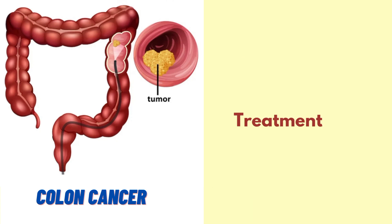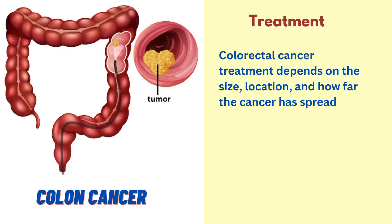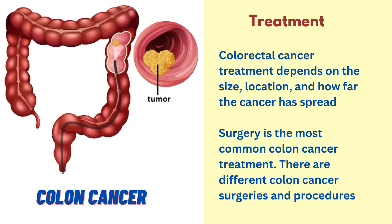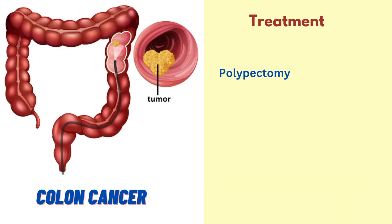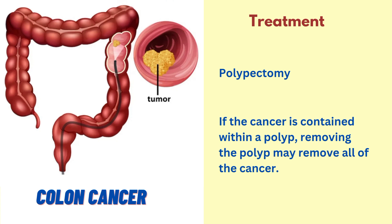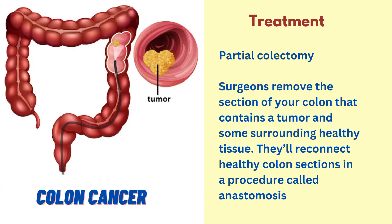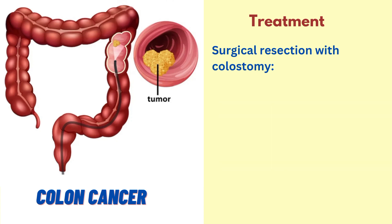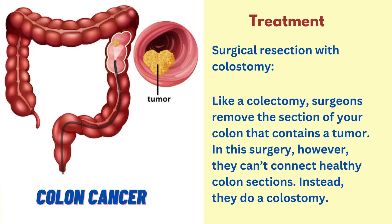Now let us discuss about the treatment. Colorectal cancer treatment depends on the size, location and how far the cancer has spread. Surgery is the most common colon cancer treatment. The first procedure is a polypectomy — if the cancer is contained within a polyp, removing the polyp may remove all of the cancer. Partial colectomy involves surgeons removing the section of your colon that contains a tumor and some surrounding healthy tissue, then reconnecting the healthy colon sections in a procedure called anastomosis. In surgical resection with colostomy, surgeons remove the section of the colon containing the tumor but cannot connect the healthy colon sections.